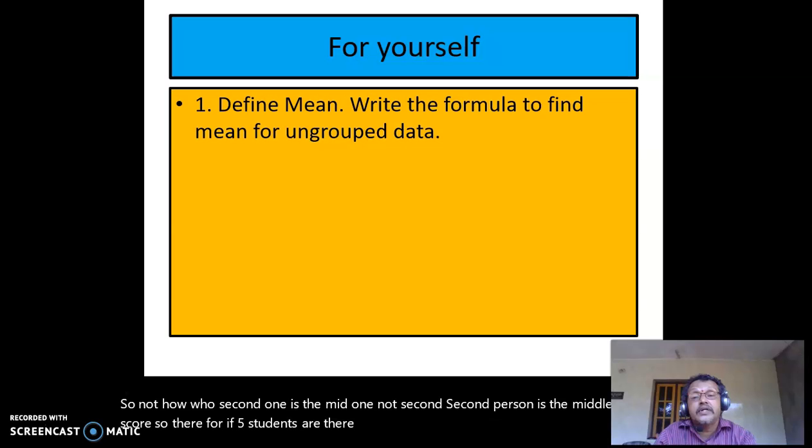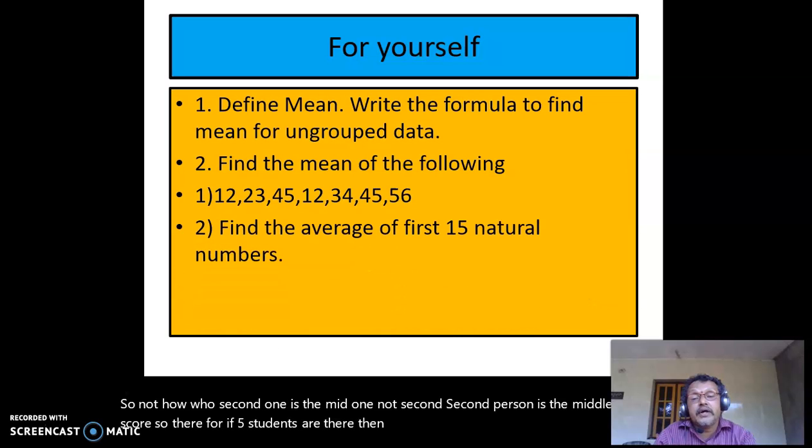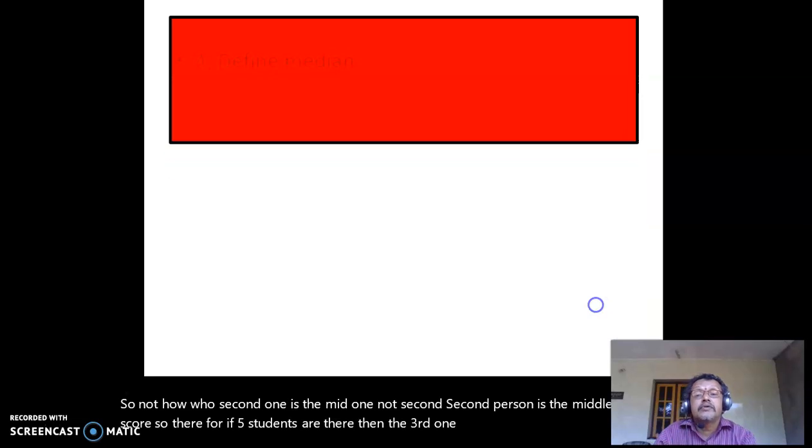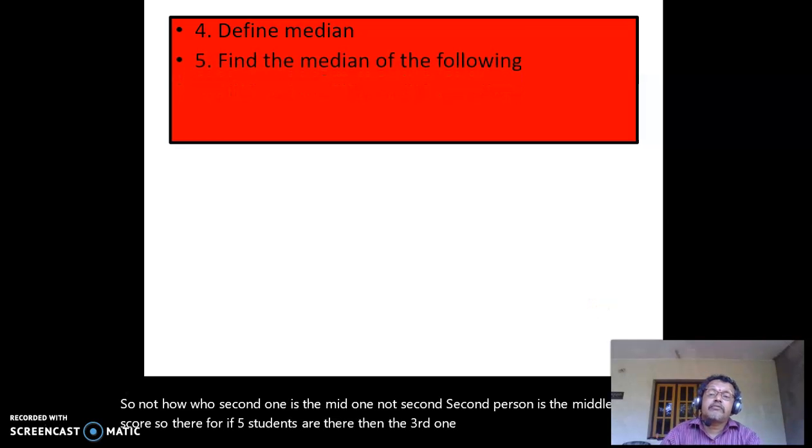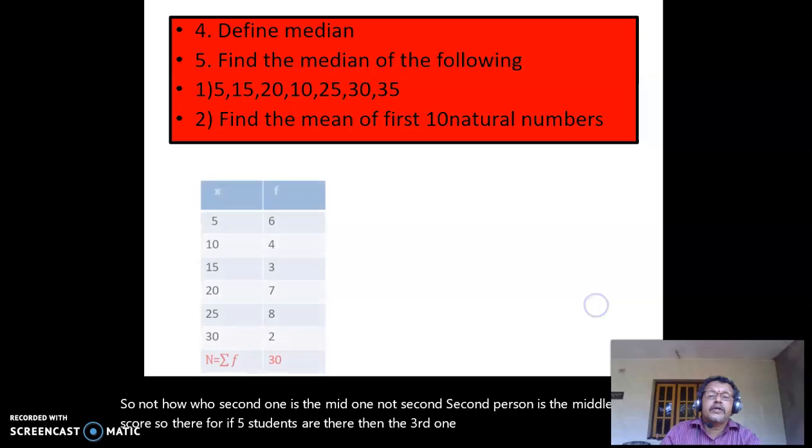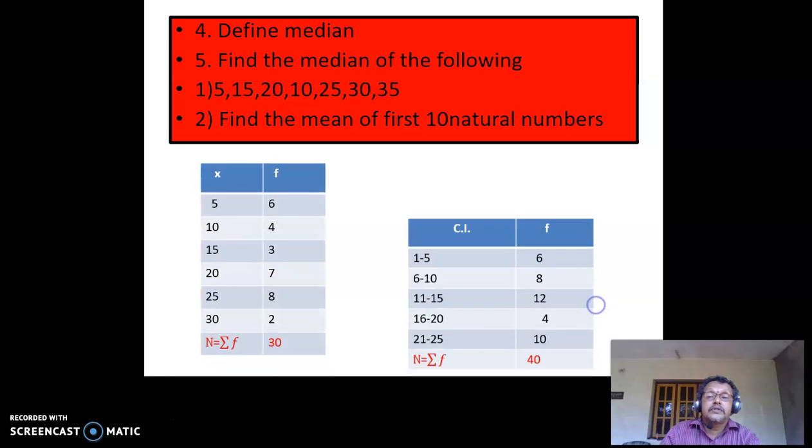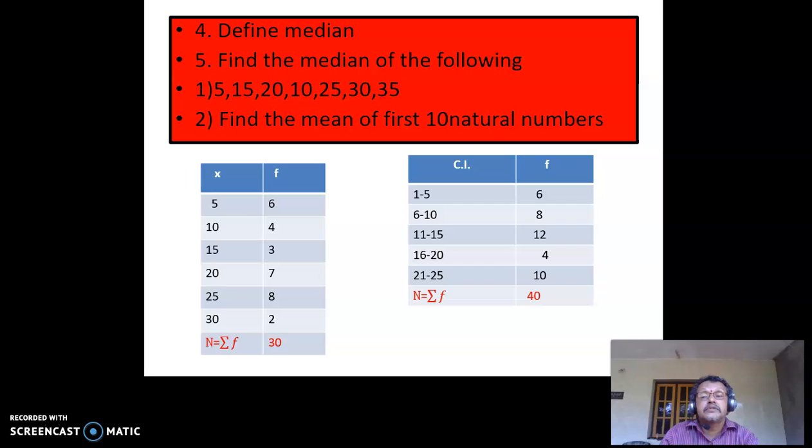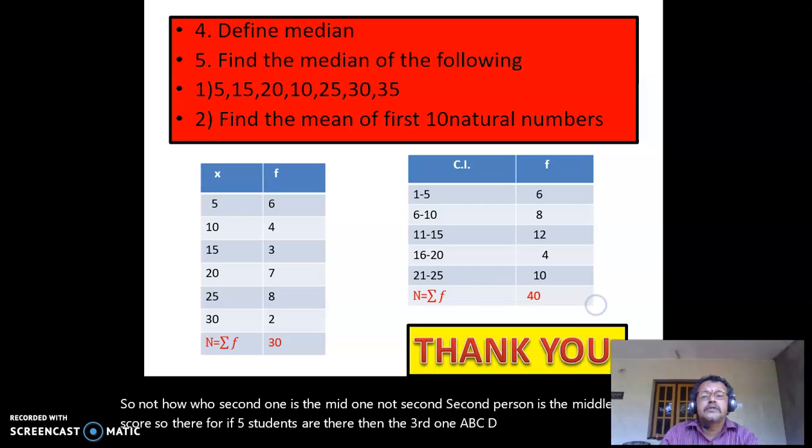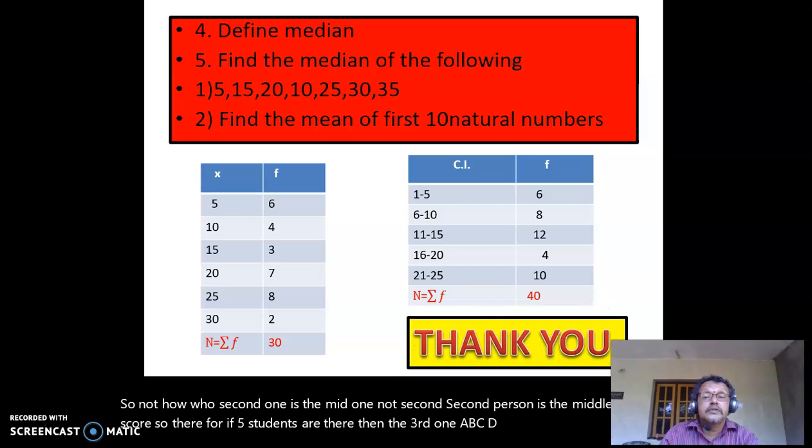So for yourself: define mean, write the formula to find mean for ungrouped data, find the average of the first 15 natural numbers, find the average weight of your family, define median, find the median of the following data sets. Thank you.